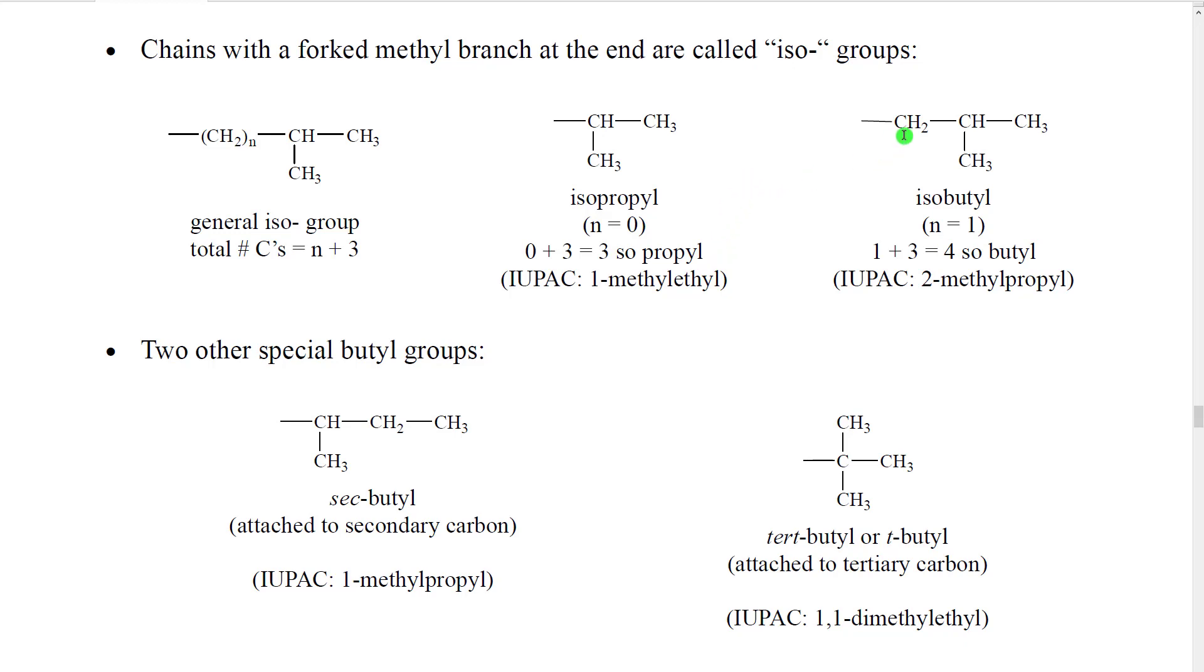In contrast, we could have one CH2 group attached. So n would be one. In that case then, we would have one CH2 plus the three for the iso. So one plus three is four. So we would call that a butyl. So this would be isobutyl. Notice how there are one, two, three, four carbons in this total group.